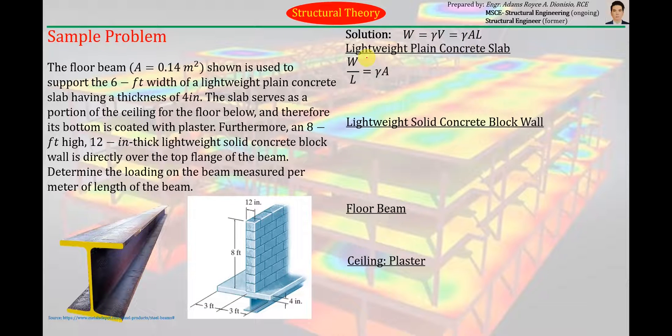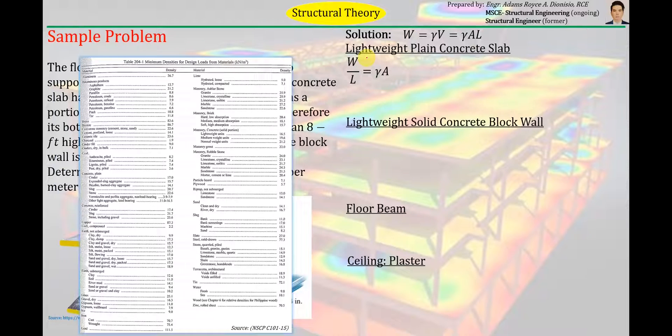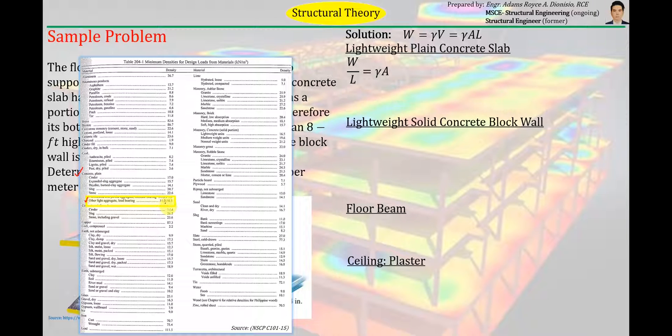So let's start by finding the unit weight of the lightweight plain concrete slab muna. So concrete slab siya. So we can refer to table 2-1. Concrete slab, let's go to the concrete portion, letter C, naka-alphabetical na yan to. And plain concrete siya. So ito yung concrete or plain concrete. Tapos lightweight. So ito yun, yung kailangan natin. Pag tinignan nyo doon, range of value yung nakalagay. So alin dyan yung gagamitin natin? 11 to 16.5 kN per cubic meter. Alin dyan yung gagamitin natin? Might as well gamitin natin yung 16.5 kN per cubic meter.